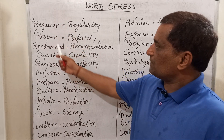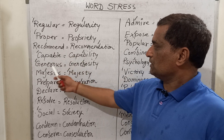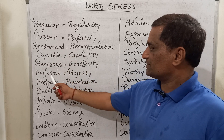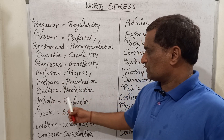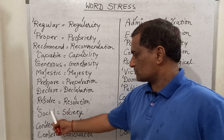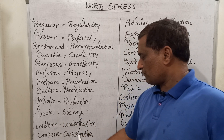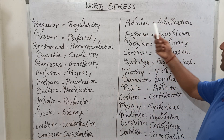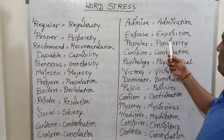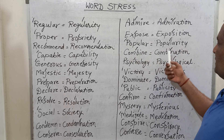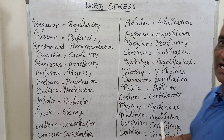I have myself started understanding automatically how to use stresses, and whenever I speak a word I start feeling that the stress will come before a particular letter. So: regularity, proper, propriety, recommend, recommendation, capable, capability, generous, generosity, majestic, majesty, prepare, preparation, declare, declaration, resolve, resolution, social, society, condemn, condemnation, conserve, conservation, admire, admiration, expose, exposition, popular, popularity, combine, combination, psychology, psychologist, psychological.